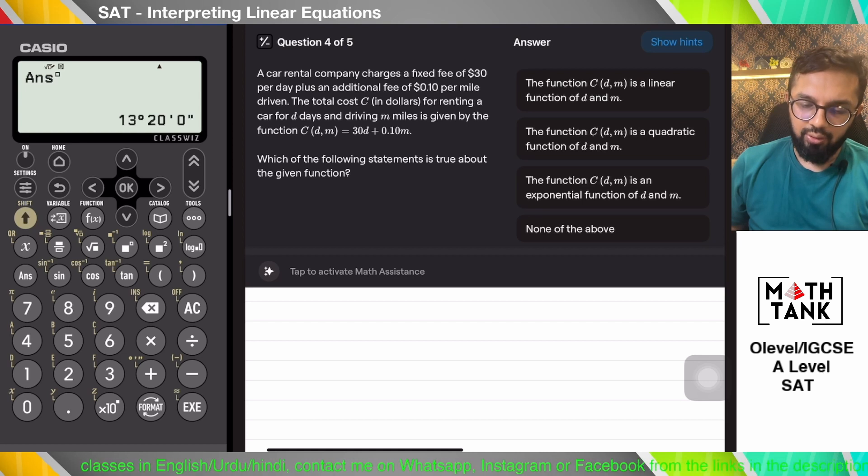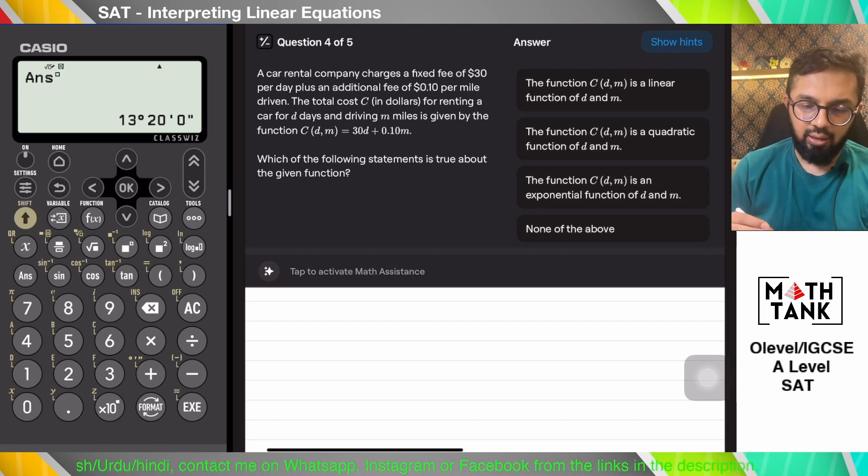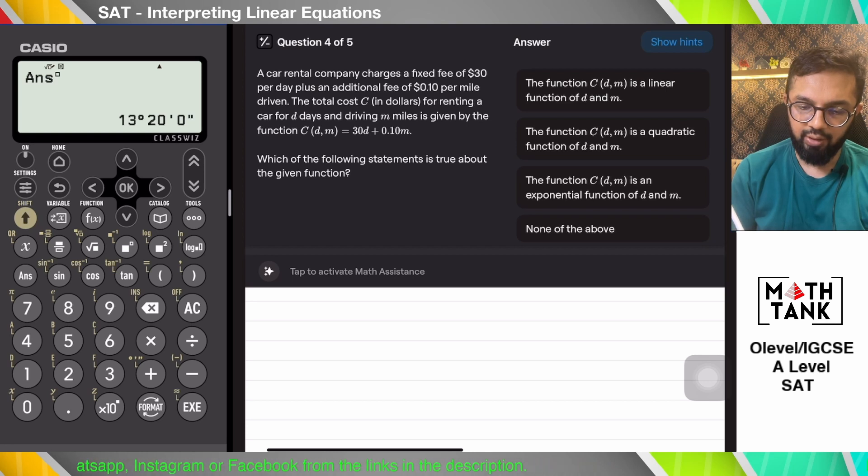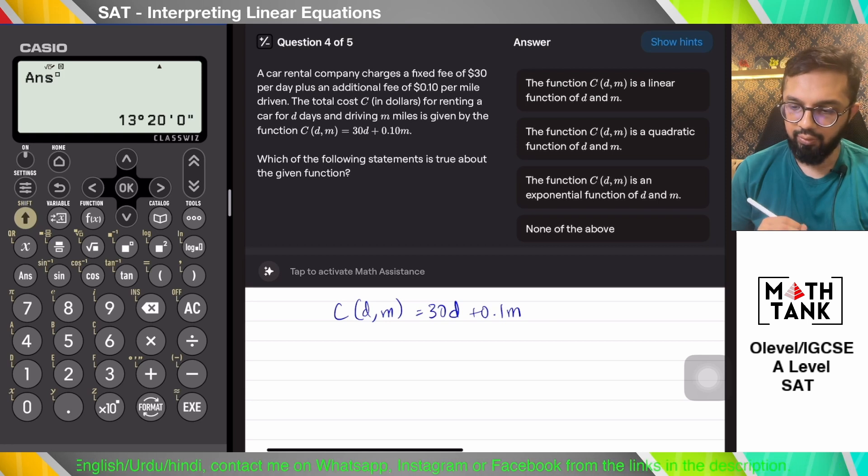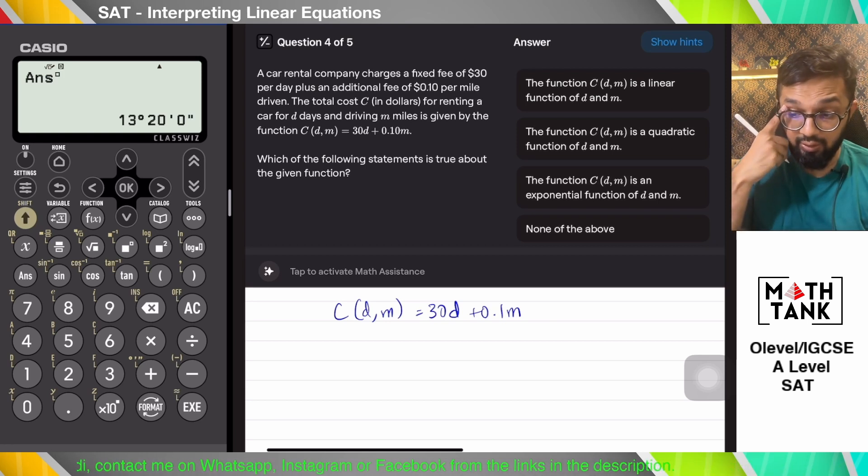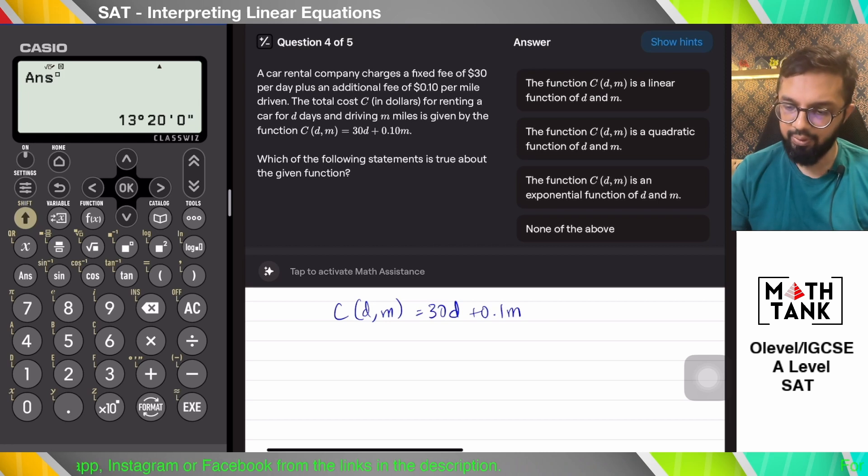A car rental company charges a fixed fee of 30 dollars per day and an additional fee of 0.10 per mile driven. The cost in dollars for renting a car for D days and driving M miles is given by the function. Which of the following statements is true about the given function? The function is a linear function of D and M. Yes, D and M both have powers of one.